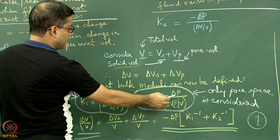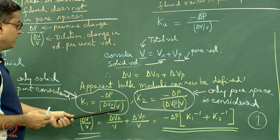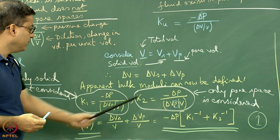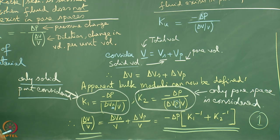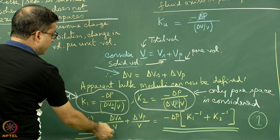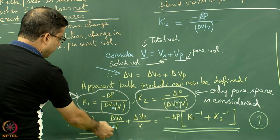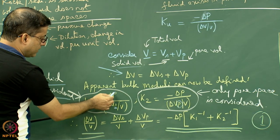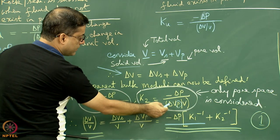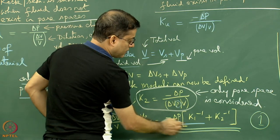The delta P in these cases is the same: under a pressure change of delta P, how a volume V of sedimentary rock has behaved is demonstrated in terms of Vs and Vp. From this, delta V divided by V equals delta Vs divided by V plus delta Vp divided by V. We find delta Vs by V equals minus delta P divided by K1, and delta Vp by V equals minus delta P divided by K2.